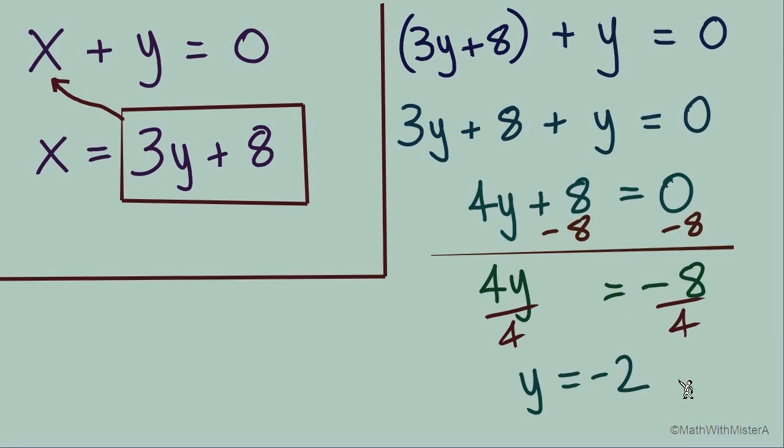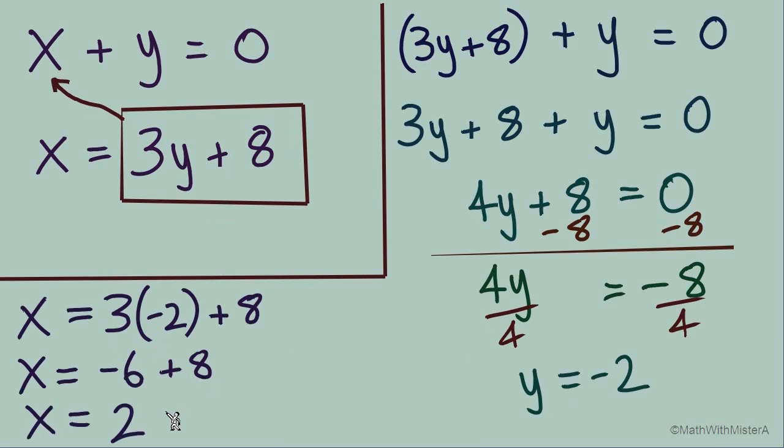So the first part of our solution this time was the y value, but both are still needed. So now how do we find the x value? It's really the same process, let's go back to where we started this equation that was solved for x because now we have a value that we can substitute in place of y. x equals 3 times y is now 3 times negative 2. Don't forget the plus 8. So we've substituted negative 2 in place of y. We'll do the order of operations. The multiply gives negative 6 and then adding 8, we get x equals 2.